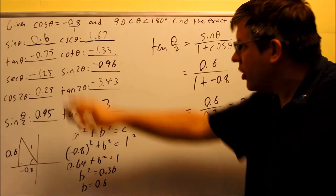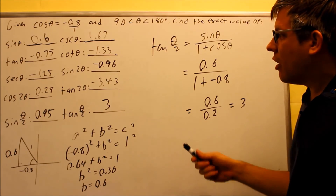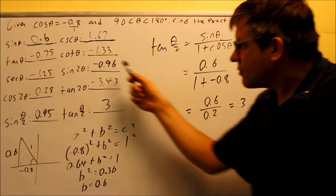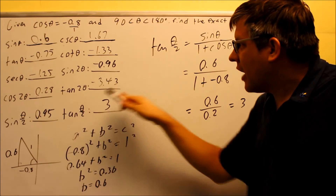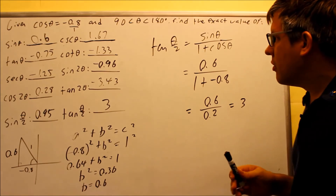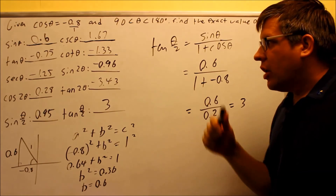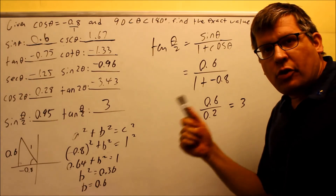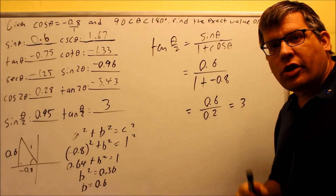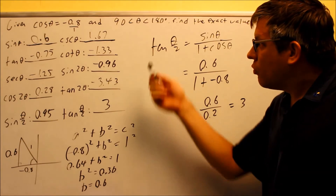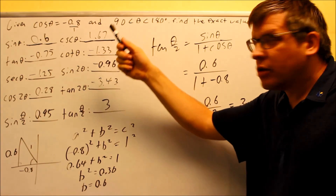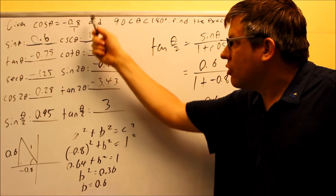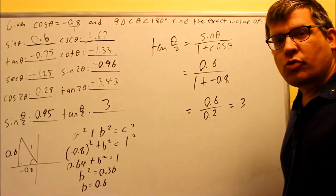All the double angles and half angles are now complete. The next problem we'll look at will be a bit harder because it involves square roots.